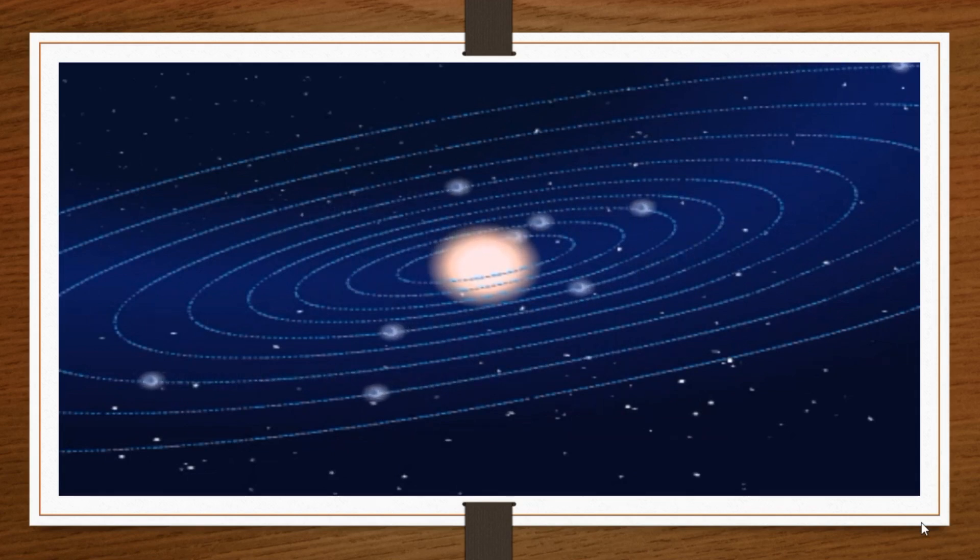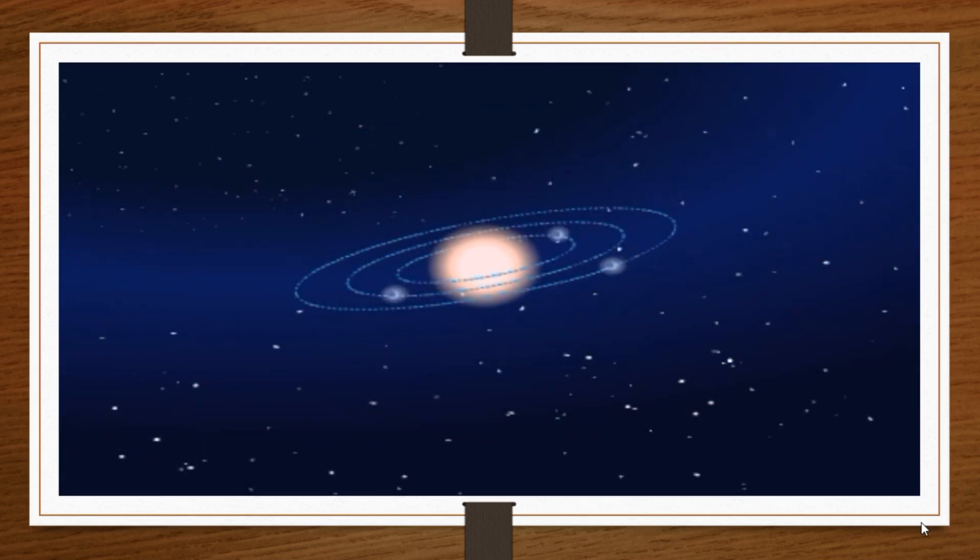As we have already seen, this simple model allowed us to calculate the energy of the electron in every accessible orbit. Consequently, we were able to predict the positions of spectral lines in the atomic emission spectrum of hydrogen.